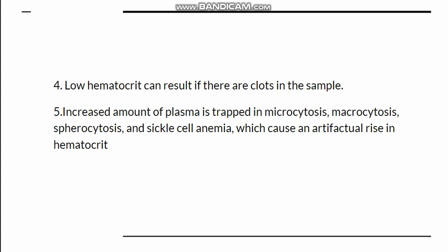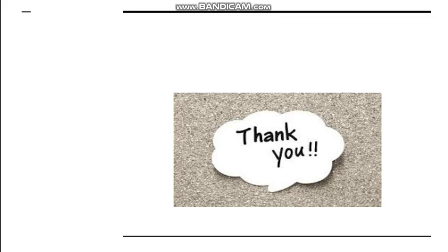Additional sources of error: if there are clots in the sample, the hematocrit can be falsely low. If RBC morphology is abnormal — such as in microcytosis, macrocytosis, spherocytosis, or sickle cell anemia — plasma can become entrapped within the RBCs, causing an artifactual rise in hematocrit. Therefore if the PCV appears deranged, we must check whether abnormal cells such as sickle cells or spherocytes are present.